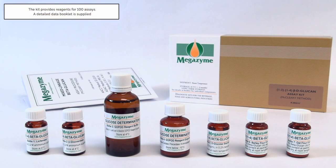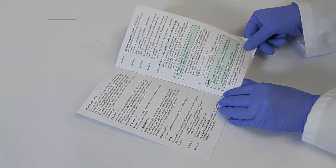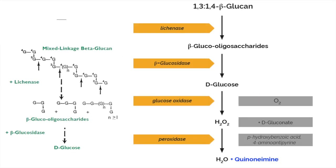The kit contains sufficient reagents for 100 assays and is supplied with a detailed data booklet. The principle of the mixed linkage 1-3-1-4-beta-D-glucan assay procedure, also known as the oat and barley beta-glucan assay procedure, is shown in this figure.